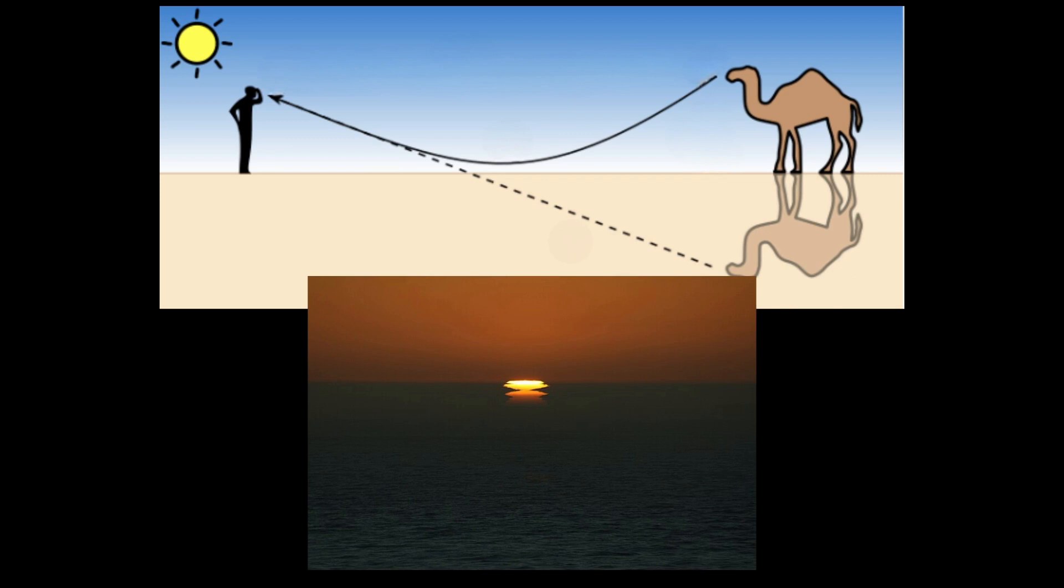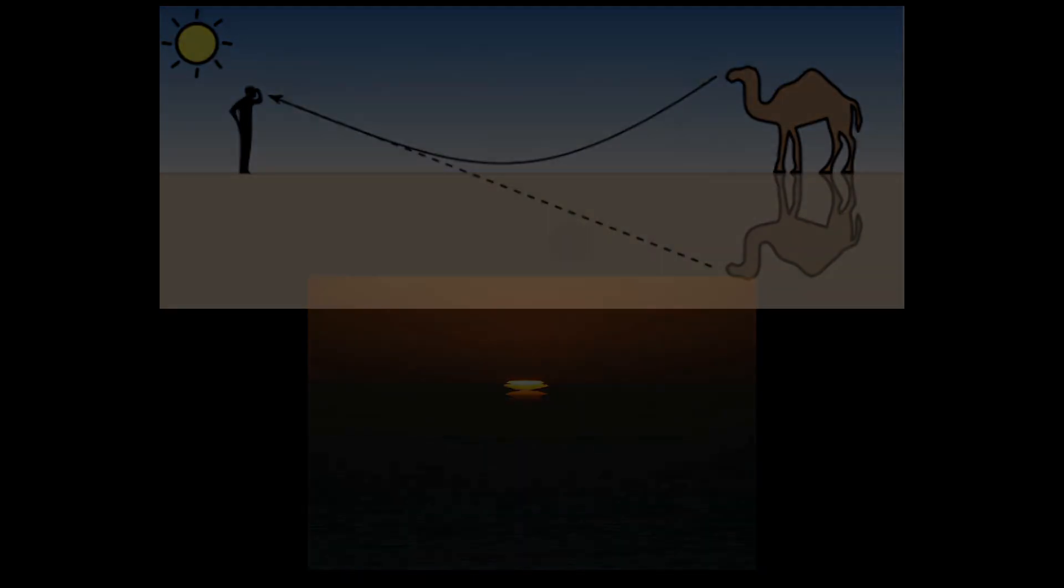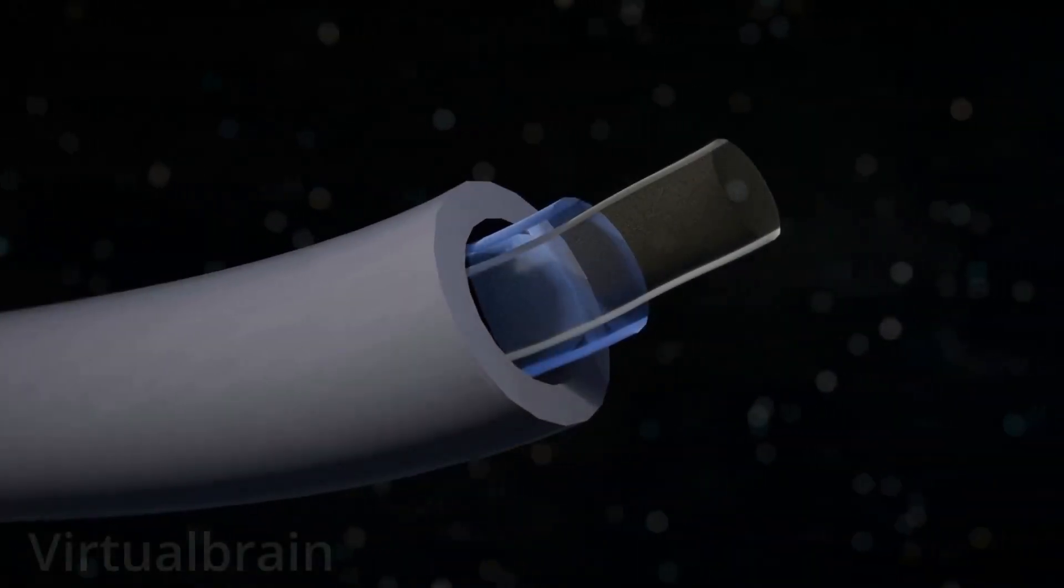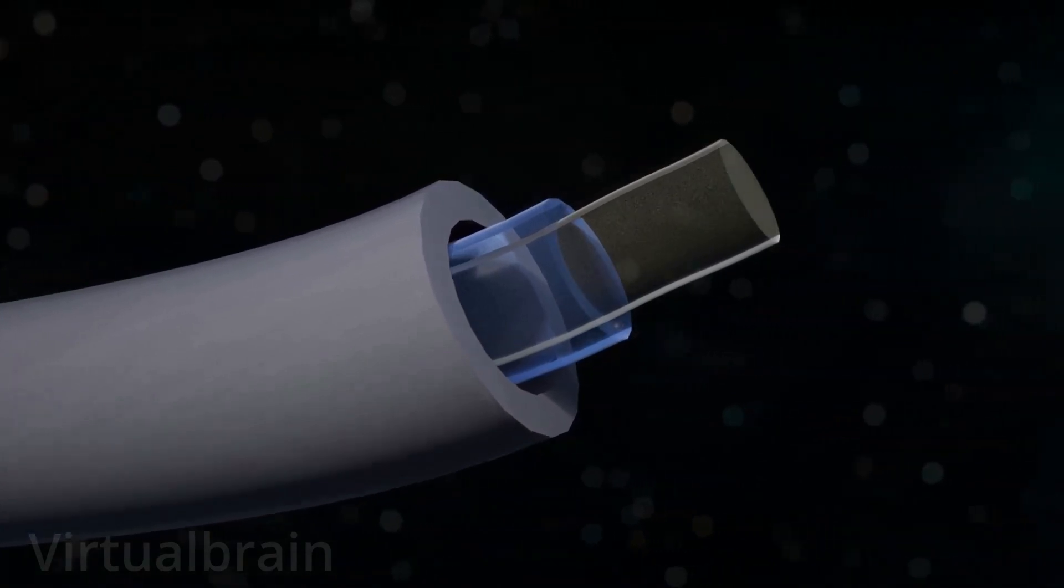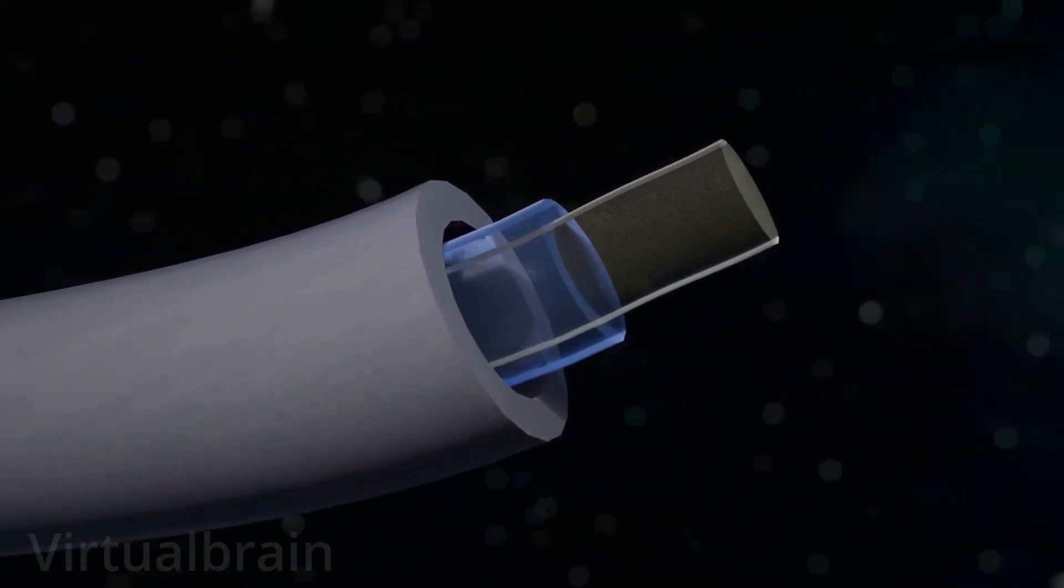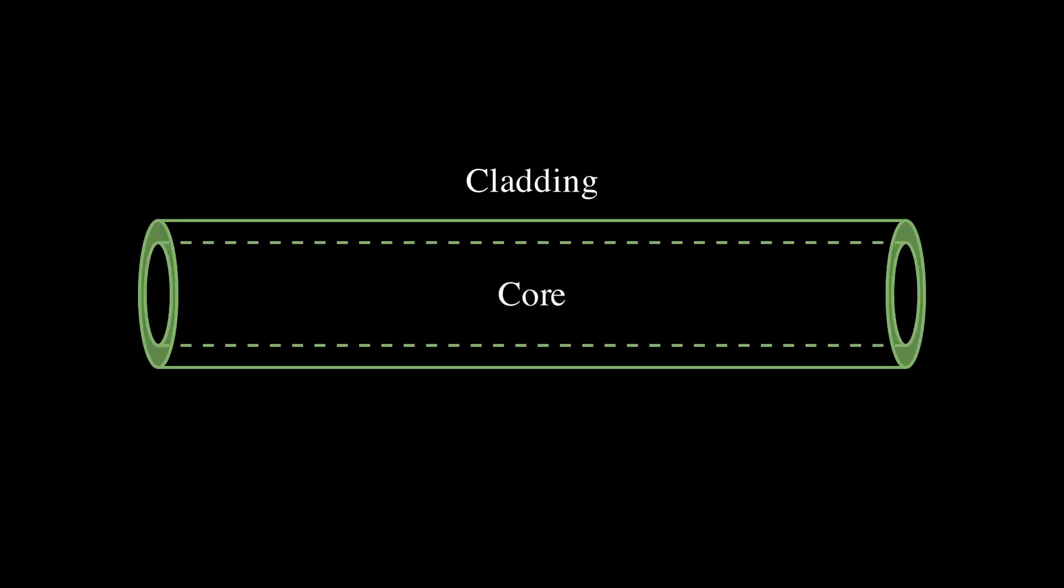However, before we start tackling continuously changing indices of refraction, let's take a bit of a detour and talk about fiber optic cables, the wires that are used to send digital information over long distances. In its most basic form, fiber optic cables consist of an outer cladding that acts as the fiber's skin and an inner core where the light actually travels.